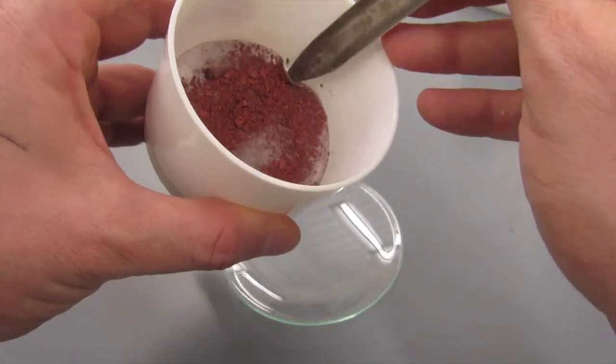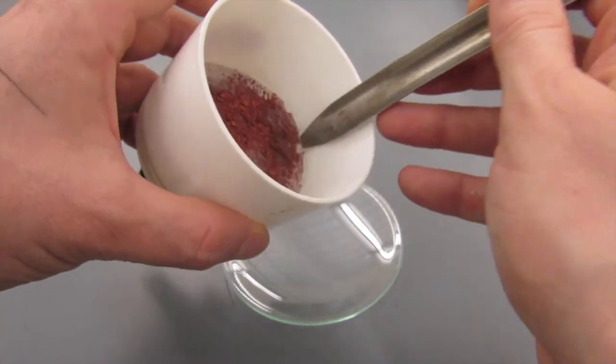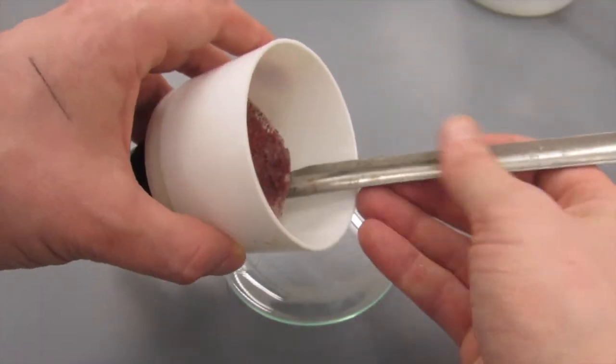I used a scoopula to help me get the filter paper out of the Buechner funnel. I then placed it on a watch plate so I could dry it overnight.